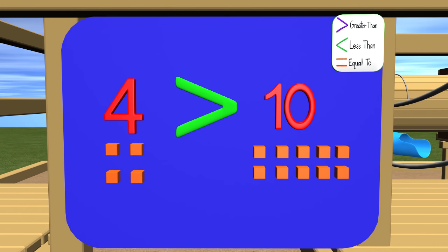Okay, so we have four on the left and ten on the right. The symbol's mouth will open to the larger number. Which number is larger? The ten is larger, so the mouth opens to the ten. If we were to read this, we would say four is less than ten.